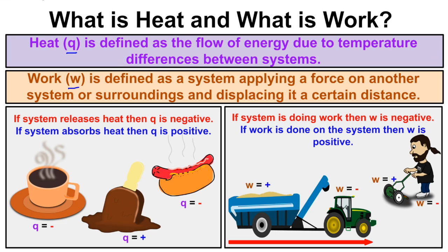Let's look at heat flow in and out of a system. If the system releases heat, then q is going to be negative. If the system absorbs heat from the surroundings, then q is going to be positive. For example, this hot cup of coffee is the system releasing heat into the surroundings, so q is negative.